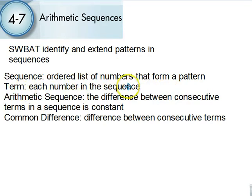Each term is each number in the sequence. An arithmetic sequence, you see the word arithmetic - the difference between consecutive terms in a sequence is constant. So we've got the same difference. The common difference is the difference between consecutive terms. Those are the definitions you need.